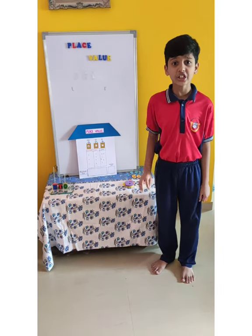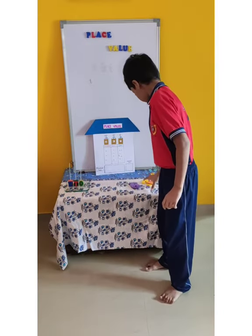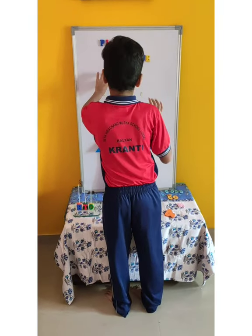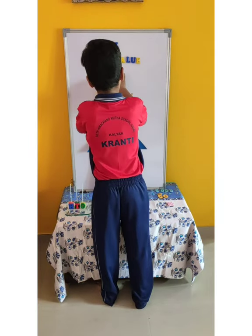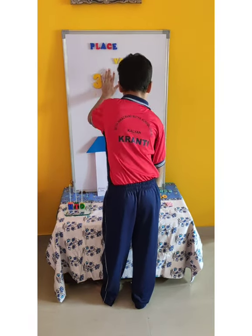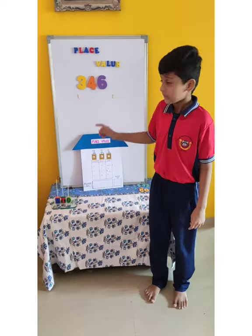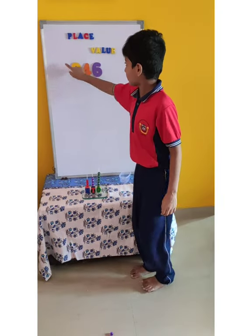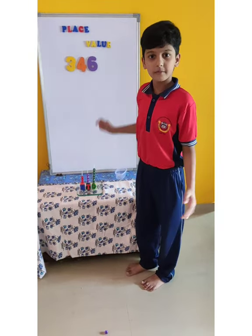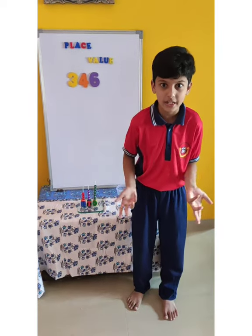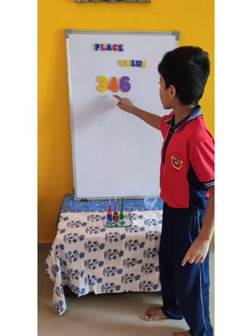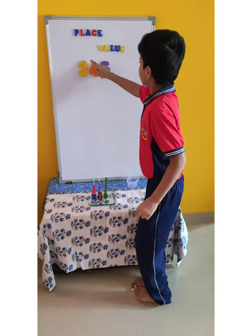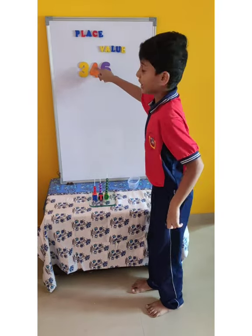Now I am taking a 3-digit number. This is 346. This is a 3-digit number. I am having this number as an example. What is place value? Place means the location of a digit in a number, and value means the value of a digit in a number.